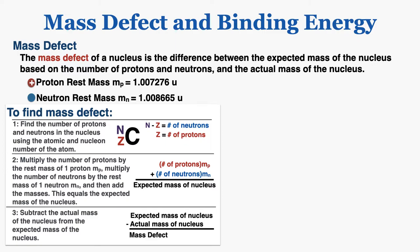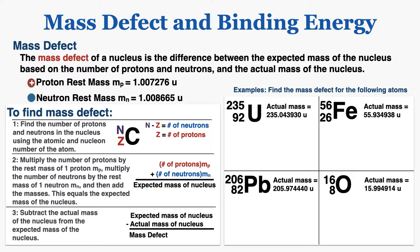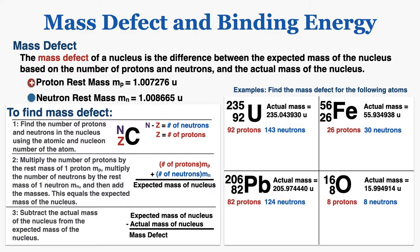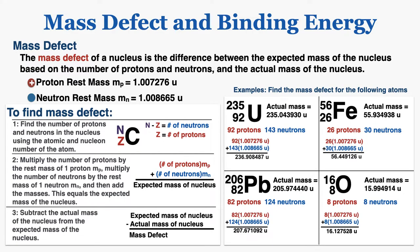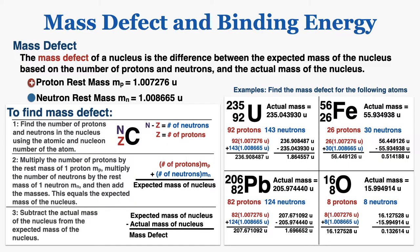To find the mass defect you just take three steps. I can run through four more examples where I find the mass defect of each using their number of protons and nucleons and the actual mass of the nucleus. Step one is finding the number of protons and neutrons; step two is finding the expected mass; and step three is subtracting the actual mass from the expected mass. Each final number is the mass defect of that atom.